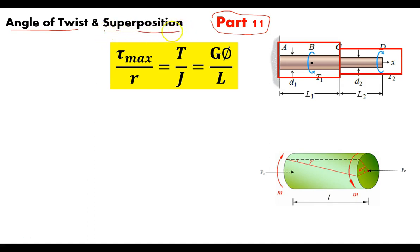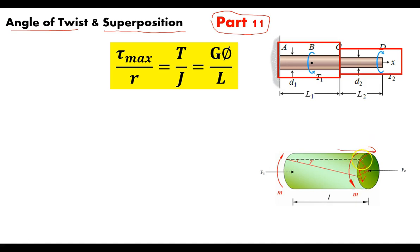Superposition was originally discussed in an earlier part of the playlist. What I want to do in this example is give you some application for how this works - both looking at the angle of twist and how superposition applies to it. The angle of twist is the angular version of linear deformation: instead of deforming along the load direction, you're deforming around the axis of the shaft.